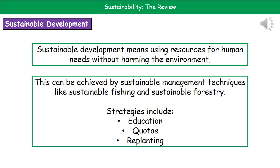What we can actually do to achieve this is by using a range of sustainable management techniques, things like sustainable fishing and sustainable forestry. The different strategies might include educating people about it, or imposing quotas so that people can only catch so many fish per week, per month, and it may involve replanting.